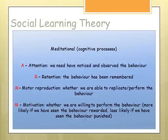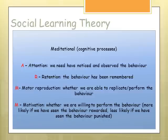There are four mediational or cognitive processes — remember the acronym ARMO. Attention: we need to have noticed and observed the behaviour in order to copy it. Retention: we need to have remembered that behaviour. Motor reproduction: we need to have the skills to replicate that behaviour. And motivation: if we've seen a person being rewarded for that behaviour, we're more likely to copy it; if they've been punished, we're less likely to copy it.